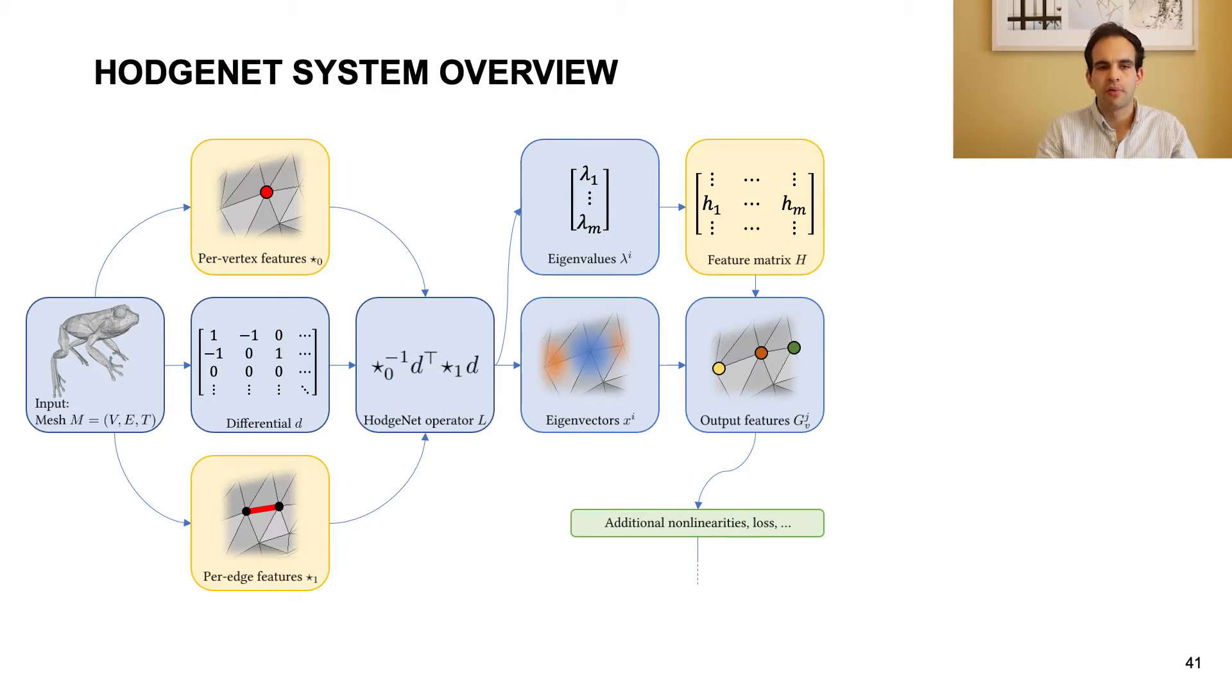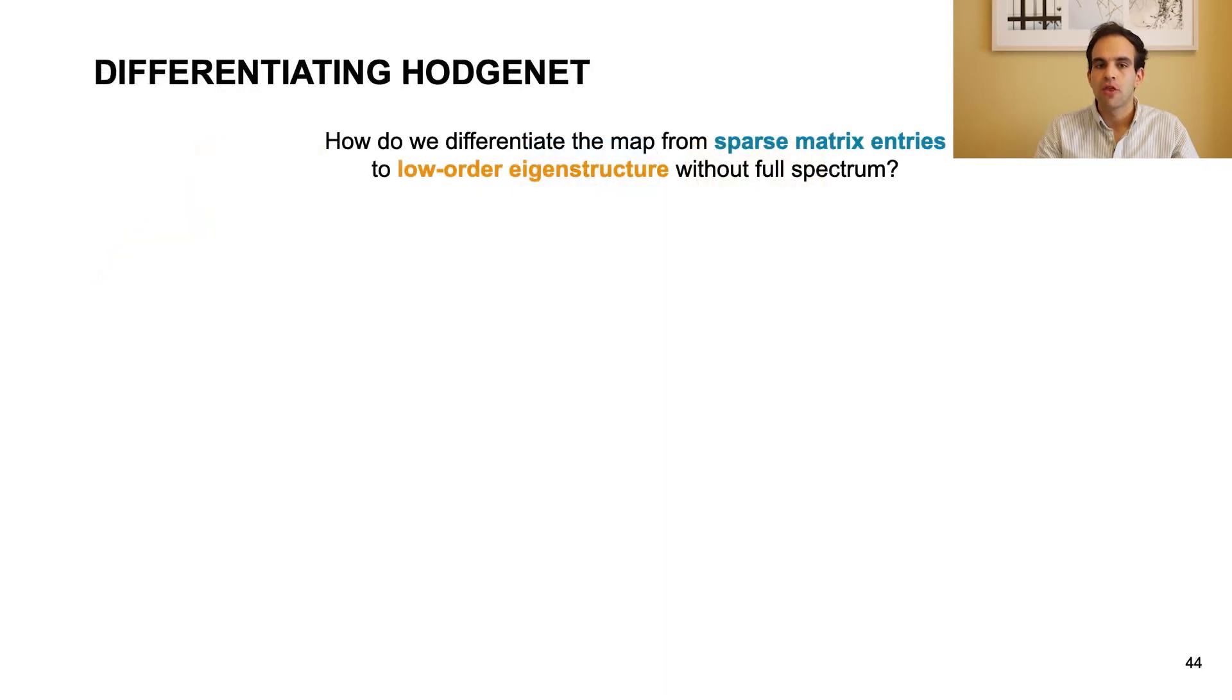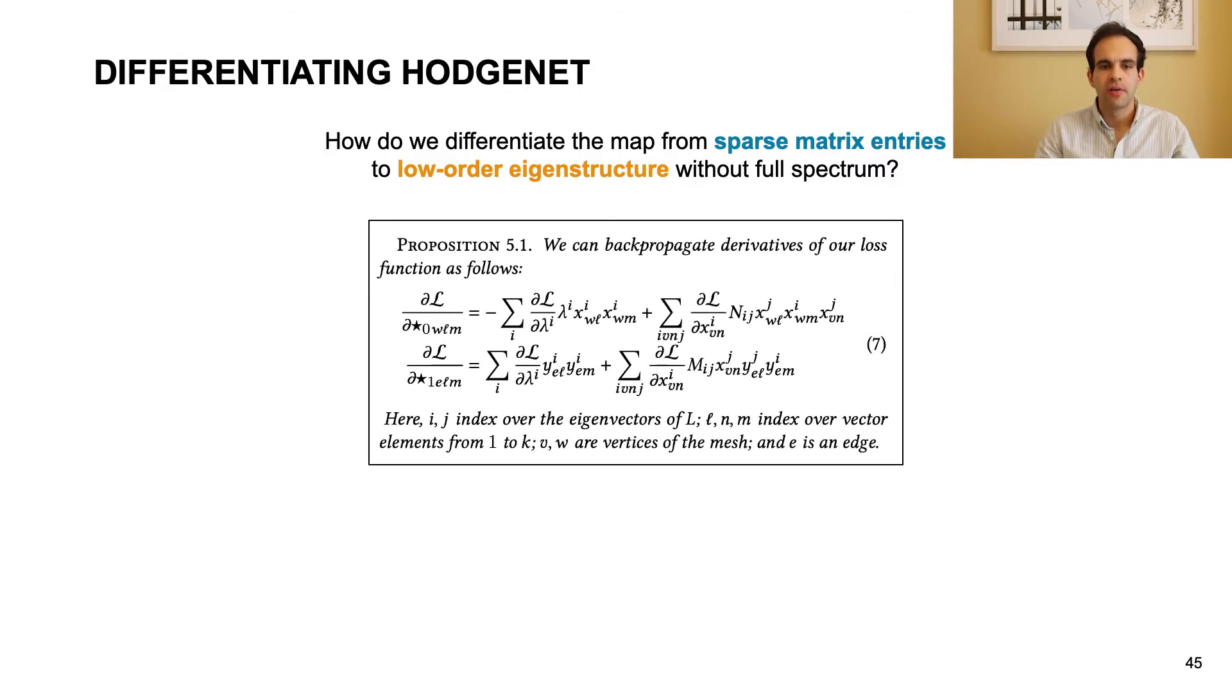While this forward pass is fairly simple, differentiating this process in the backward pass poses some difficulties. In particular, we must differentiate the eigendecomposition of our learned operator matrix, a sparse matrix whose number of rows and columns is equal to the number of vertices in the mesh. Although we only need the eigenvectors corresponding to the smallest several eigenvalues, which contain the meaningful lower frequency information, rather than the full spectrum, doing this computation using standard autodiff tools on GPU would require us to convert the sparse matrix into a dense one, and we would quickly reach both a runtime and space bottleneck on meshes of typical size. We solve this problem with a combination of math and engineering. We give a derivative approximation that does not require the full set of eigenvectors.